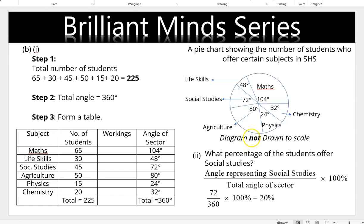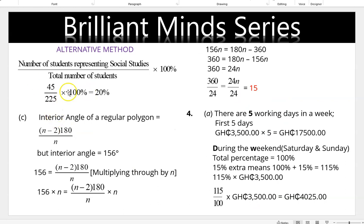The pie chart is not drawn to scale. The question also asks for the percentage of students who offer Social Studies. There are two methods: using the angle of sector — divide by 360 × 100; or using the number of students — divide by 225 × 100. Social Studies = 72°/360 × 100 = 20%. Using number of students: 45/225 × 100% also gives 20%.